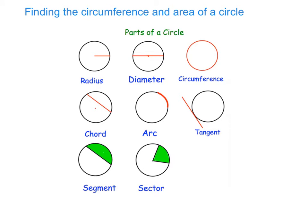So these are the different parts of the circle that you should be familiar with. The first one is the radius — that's the distance from the centre of your circle to the circumference, or the outside of the circle. The distance from one side of the circle to the other, cutting through the centre, is what we call the diameter. And that is very important for a lot of these questions. Then the perimeter of our circle, or the distance around the outside, is what we call the circumference.